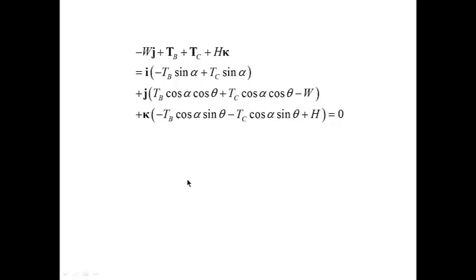Now, let us return to the original vector valued equilibrium equation. Since the forces tb and tc have been determined, we can rewrite it explicitly. In doing so, I will factor out the projections or the coefficients in front of i, j, and k. Note that these terms represent sum of the forces on x, sum of the forces on y, sum of the forces on z.